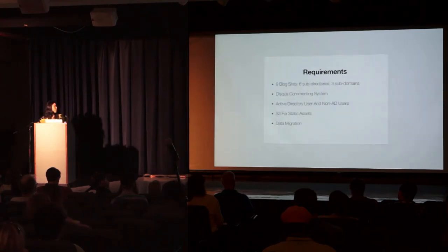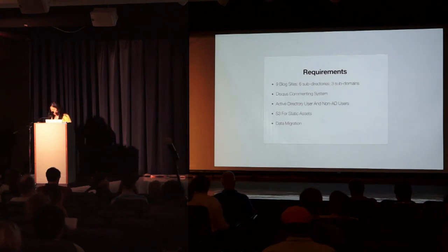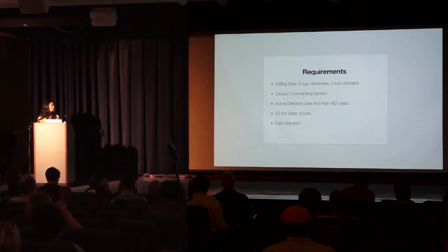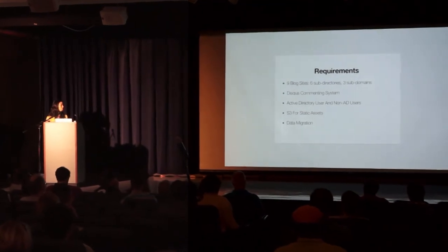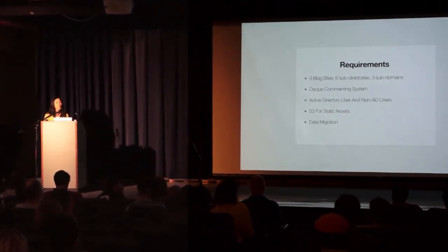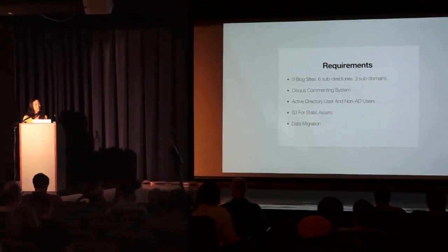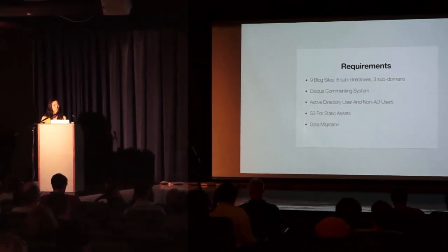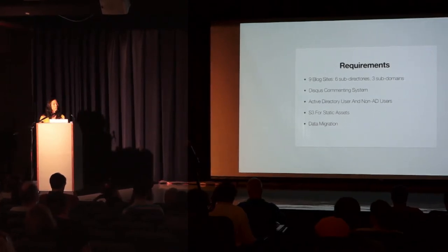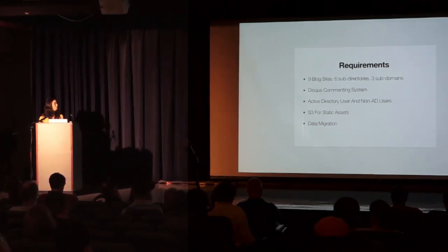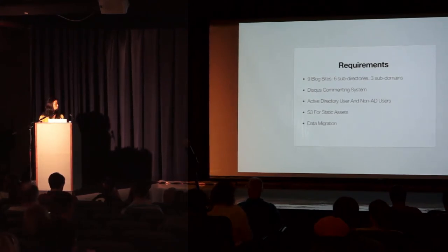The requirements were: they wanted nine blogs, six in sub-directory format and three in sub-domain format. They wanted to use the Disqus commenting system instead of the native WordPress commenting system. They have Active Directory users, so they wanted to use those users in WordPress as well. They also had freelance editors not on Active Directory, so they wanted those users in WordPress too. And they wanted to use Amazon S3 for static assets — images, videos, and so on.